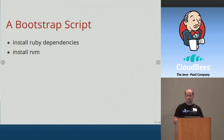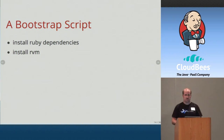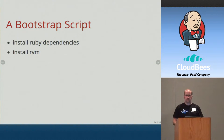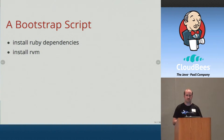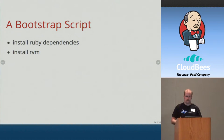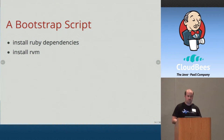After the rake task starts the server and comes back, you've got a server running that you can SSH into. The first step is to upload a bootstrap script and run it. The bootstrap script installs Ruby dependencies and then installs RVM — Ruby Version Manager — which is how we manage multiple versions of Ruby. We use Ruby to run Chef, so that's the one thing we need on the box before we can start configuring it. The bootstrap script takes less than five minutes, and at the end you're ready to start running your Chef recipes.